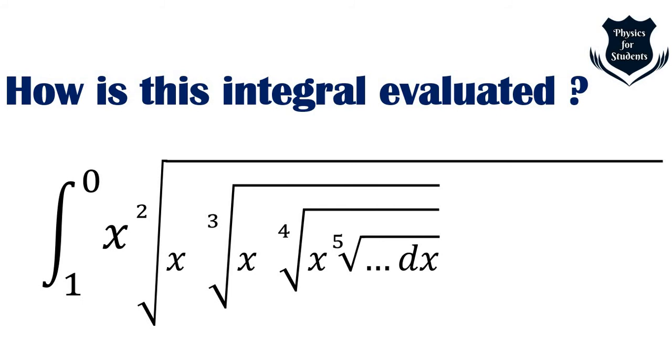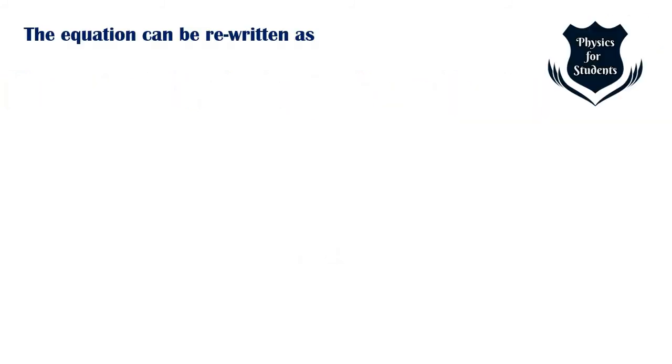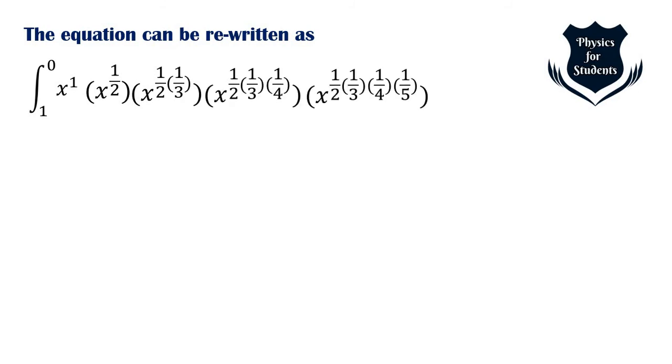It looks a bit weird, but we'll find out a way to solve it. What we can do is rewrite the equation something like this. We can put the power of x as 1/2, then 1/2 multiplied by 1/3.